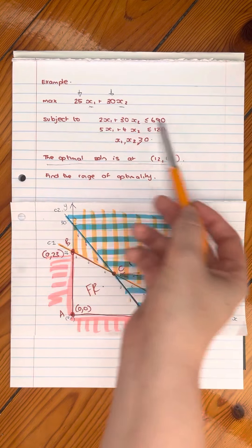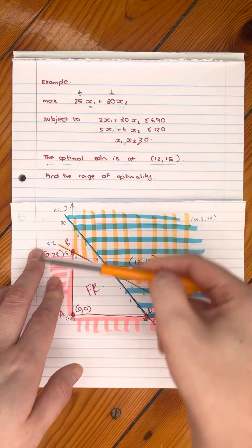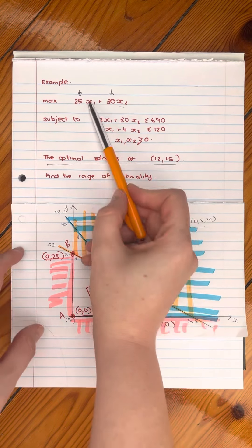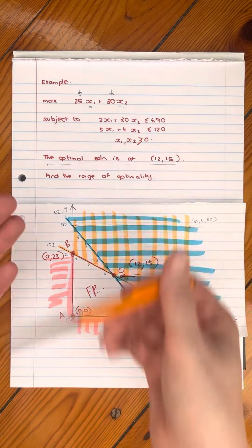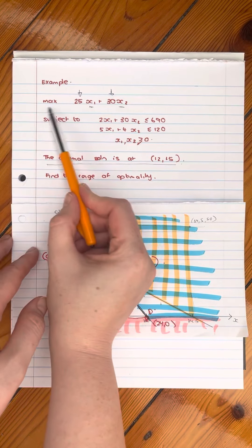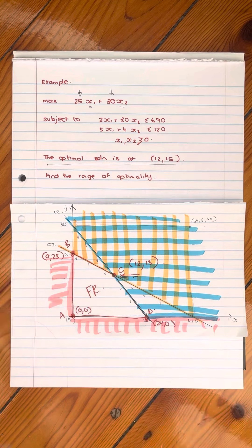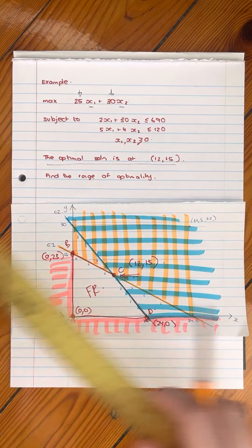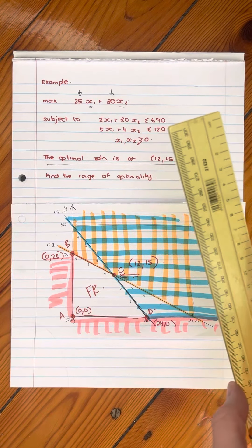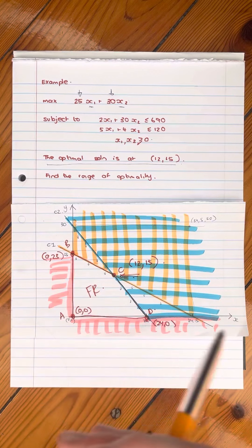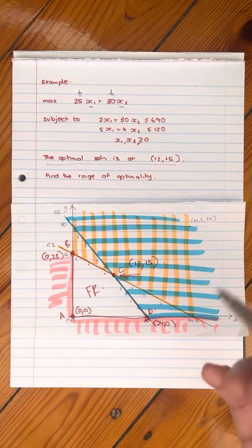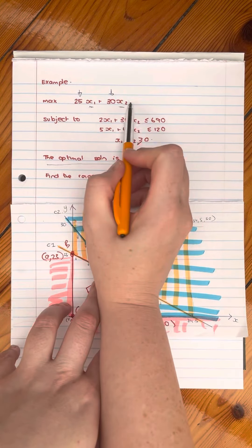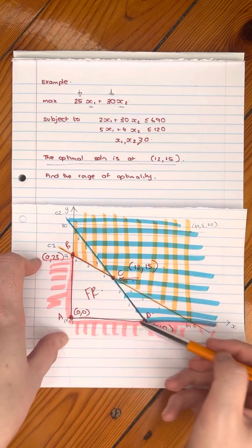Remember, we go ahead and solve this: you would plot the constraints, scratch out where it's not feasible, find those corner points, put the corner points into the objective function, and figure out which one is the maximum — in this case because there's a max there, and that is point C. There's another way you could approach this: plot the objective function line and then slowly push it across your page. The optimal solution is where the objective function is tangent to the feasible region.